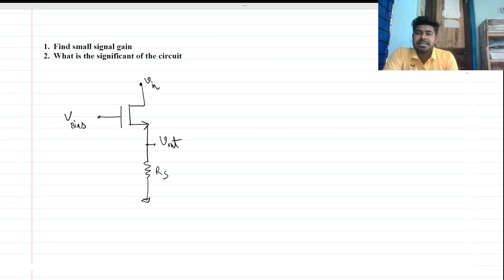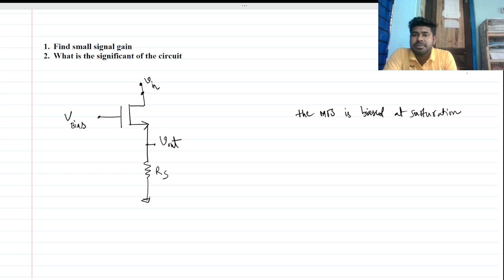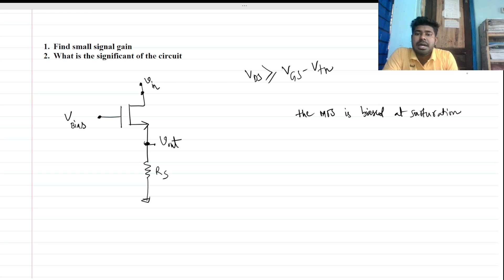You can see this is a non-conventional topology. We have to assume the MOSFET is biased in saturation. Saturation means there must be a bias — VDS must be greater than VGS minus the threshold voltage.